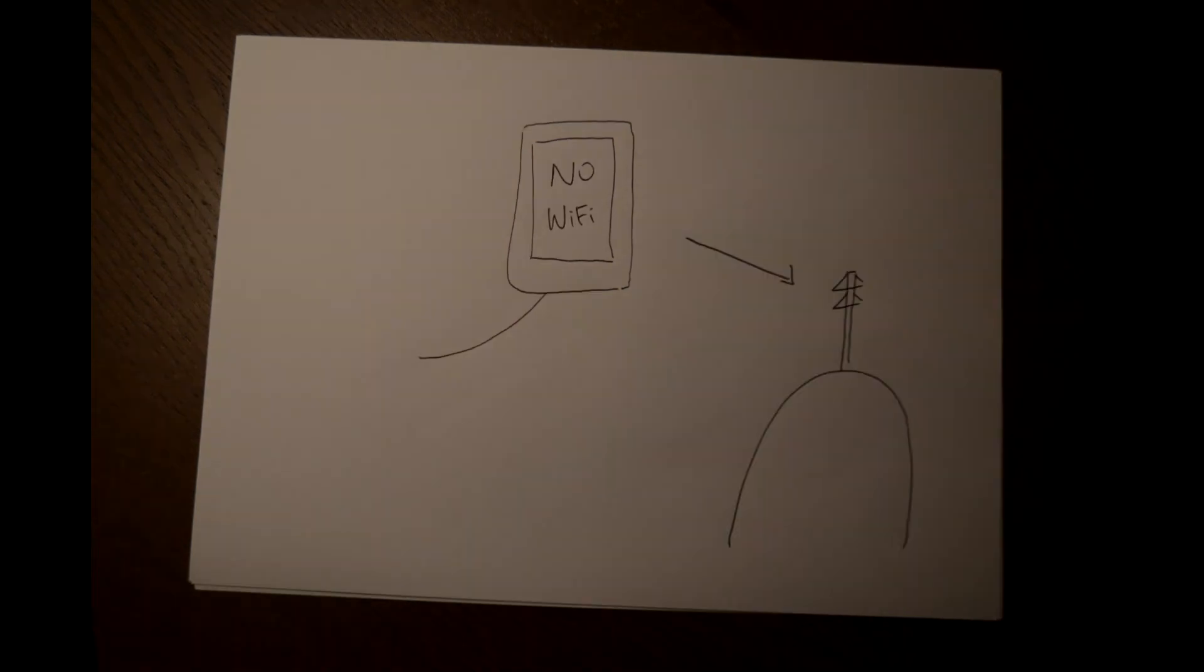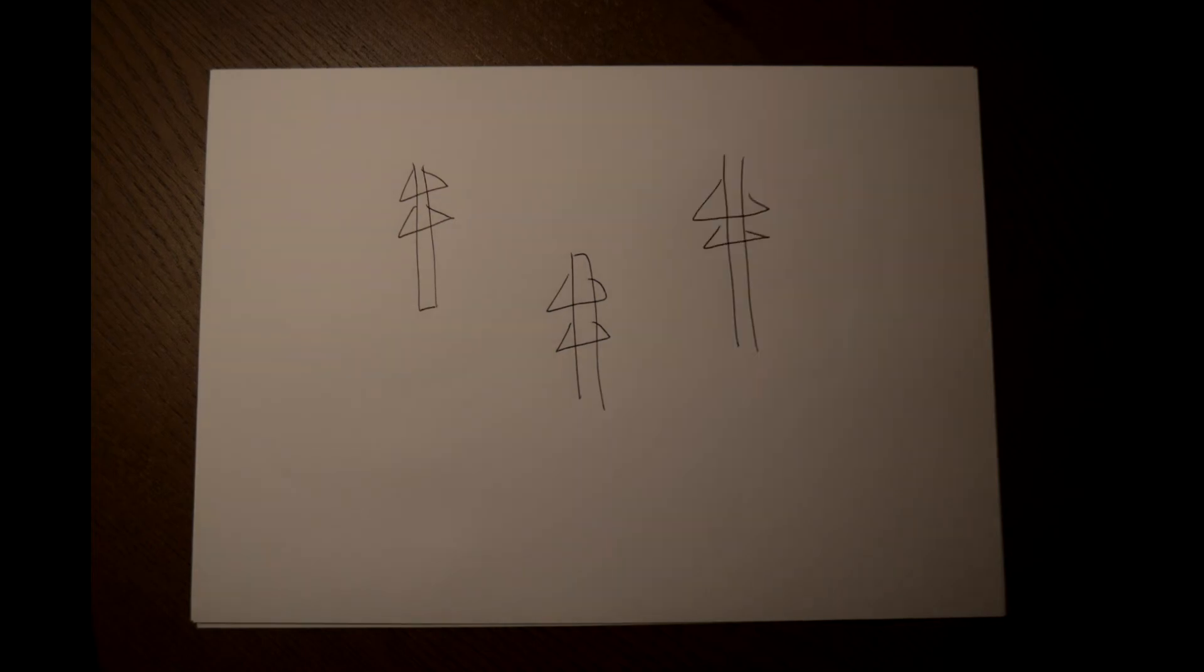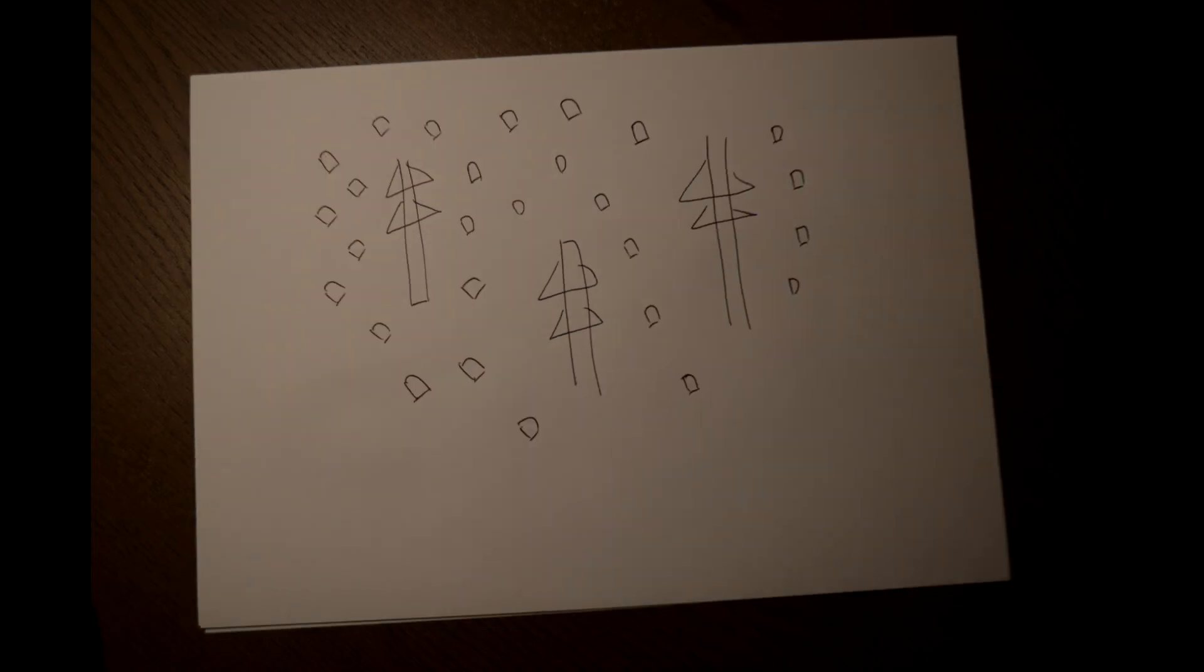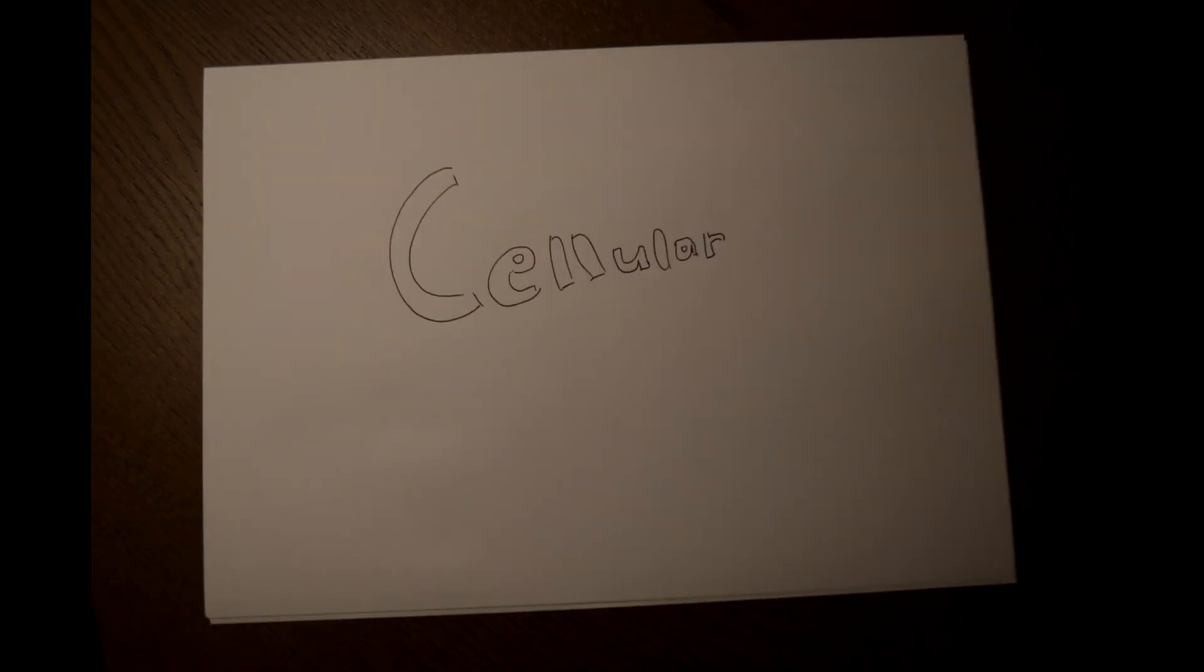When you go outside and you have no Wi-Fi, sometimes you'll see these big poles with a white contraption on top. These are cellular towers. Although there aren't many, all phones connect to these big guys with, you guessed it, radio waves. More specifically, this particular signal is called the cellular wave.